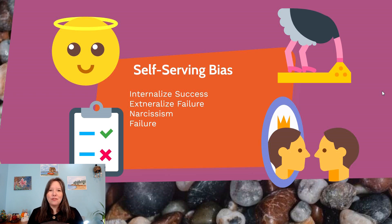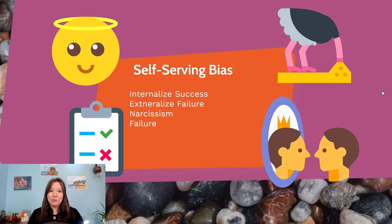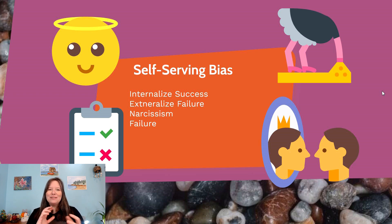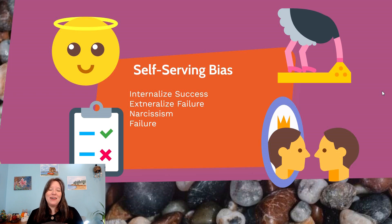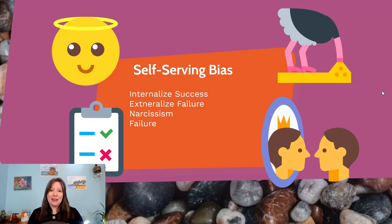When an individual with self-serving bias is in a relationship or working with colleagues, they constantly think that every problem is not their fault — it's the other person. If the other person tries to meet them halfway and apologize, they won't apologize in return; they'll say, 'Yeah, you should be sorry.' There's a one-sidedness where they always feel they're on top. However, we actually find that individuals with a very strong self-serving bias tend to be more likely to fail, because they don't acknowledge their mistakes and can't learn from them.